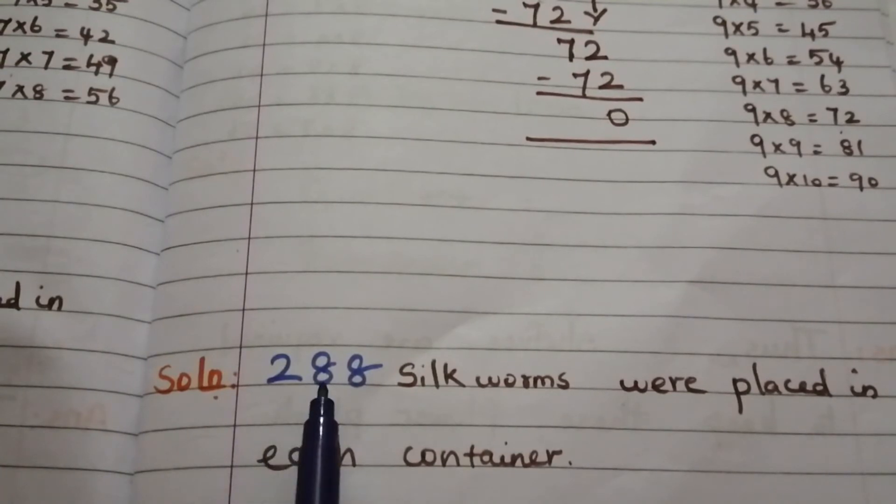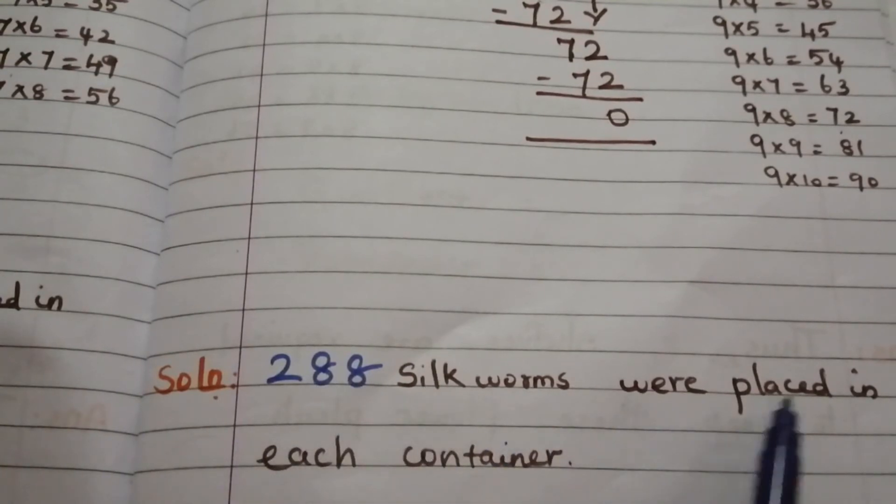Thus, 288 silkworms are placed in each container.